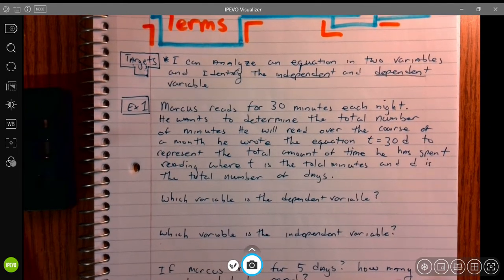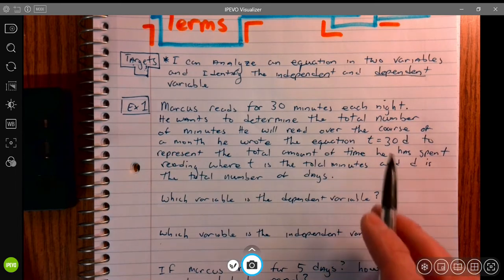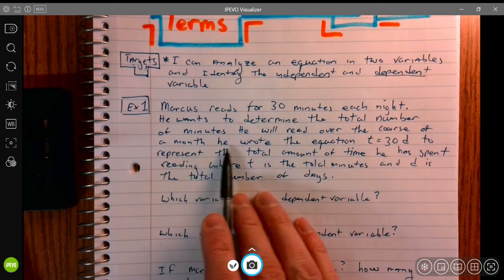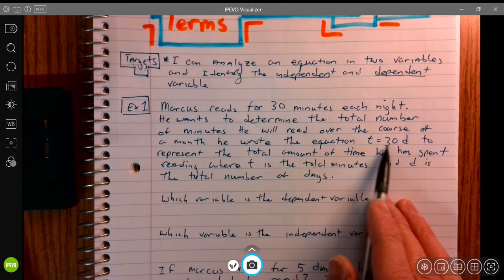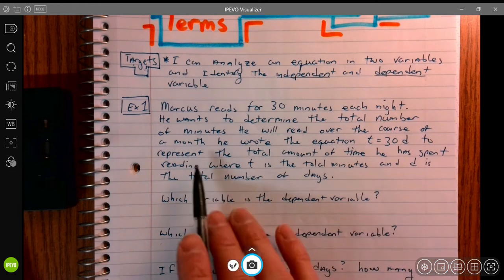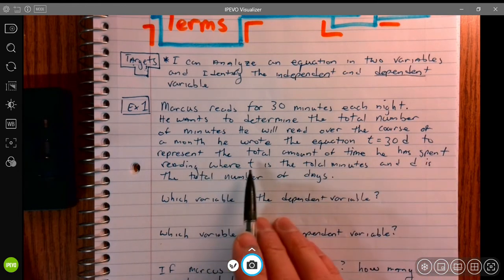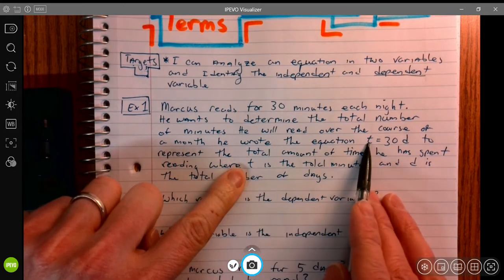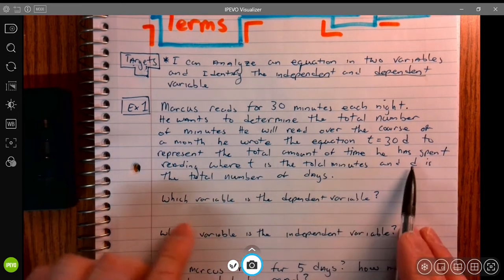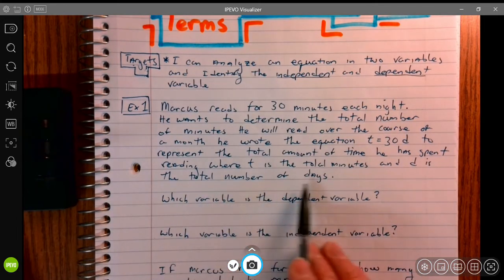Example number one. Marcus reads for 30 minutes each night. He wants to determine the total number of minutes he will read over the course of a month. He wrote the equation t equals 30d to represent the total amount of time he has spent reading, where t is a total number of minutes, where t is a total number of days.